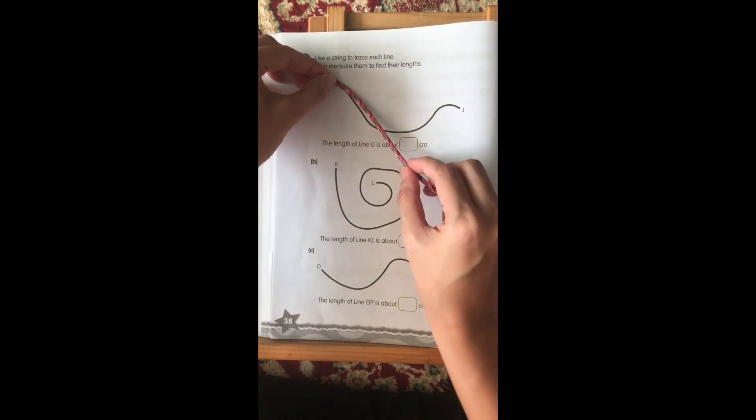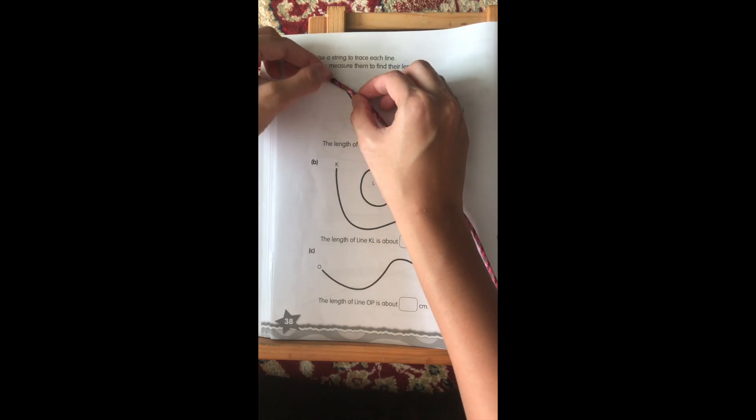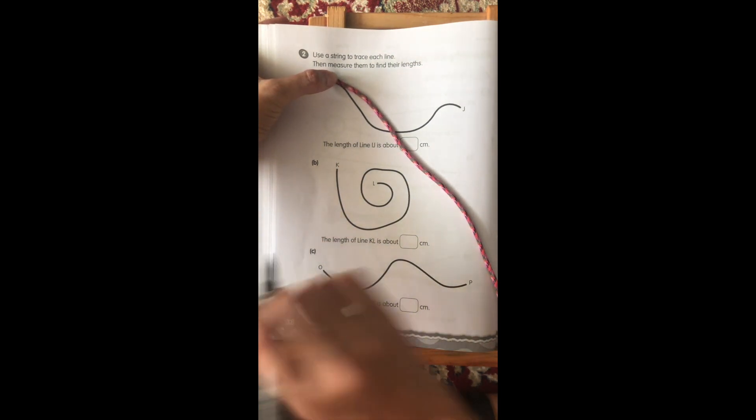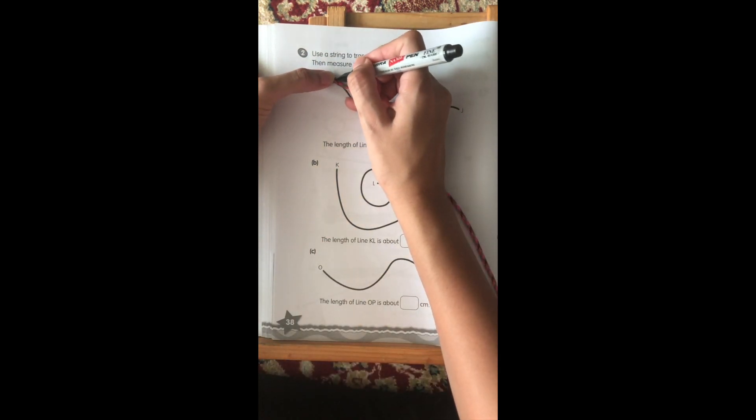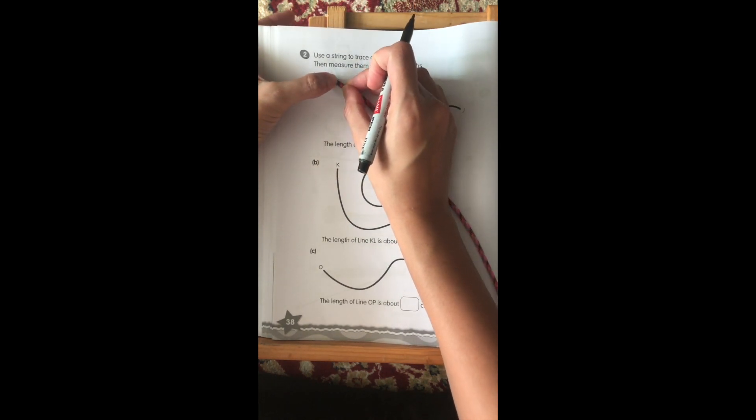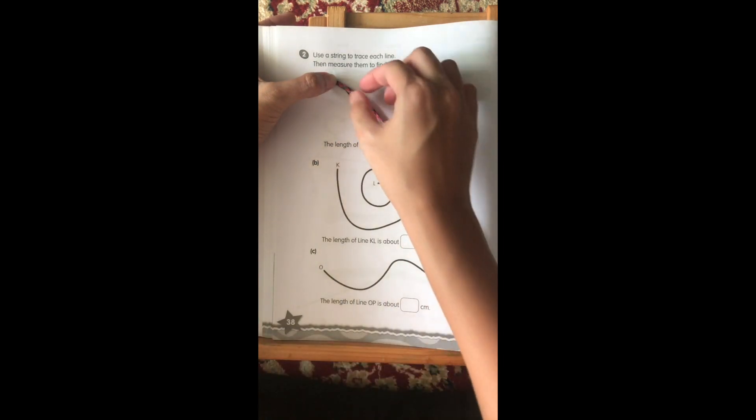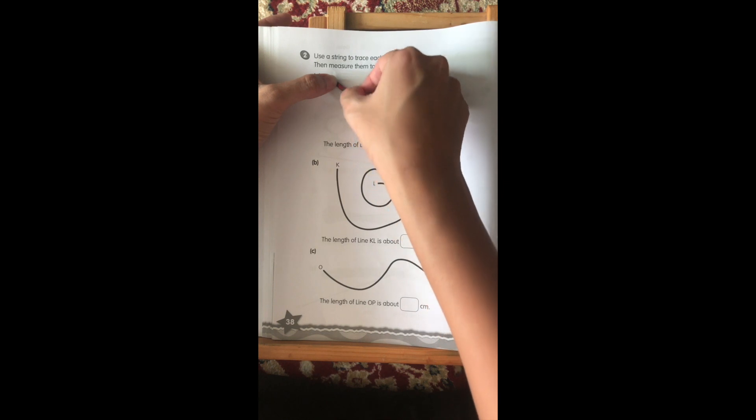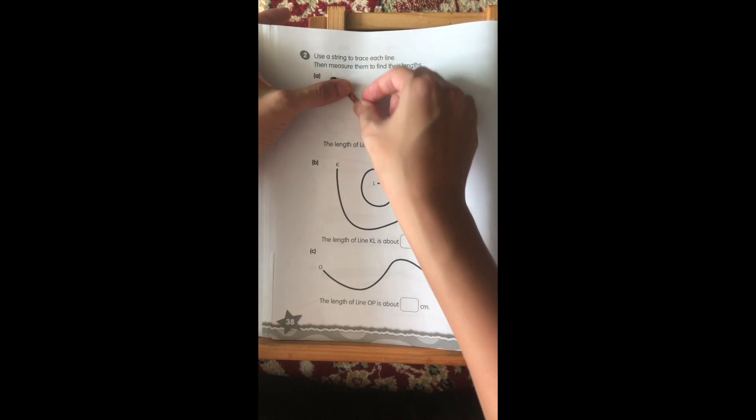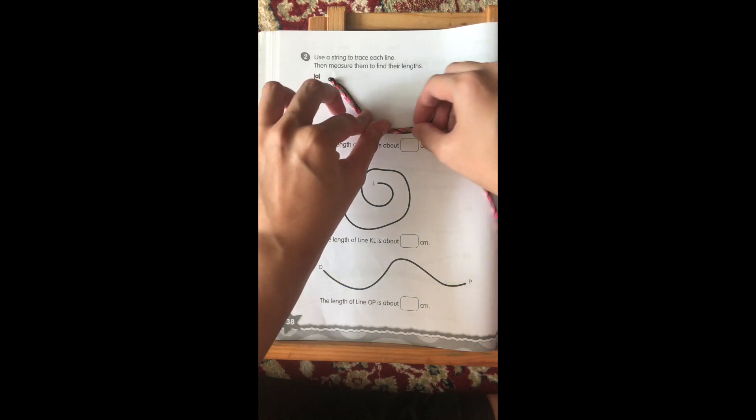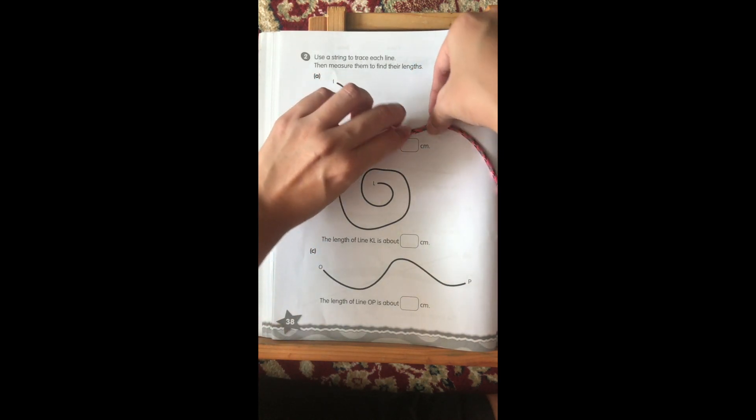I will start my string at the starting point and using my marker, I make a mark here. So, I know that's where I start. Once I've done that, I trace the string along the line. I need to make sure that the string doesn't move. Make sure it follows the line closely.